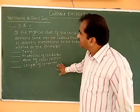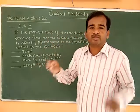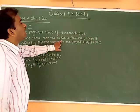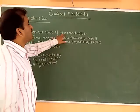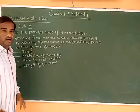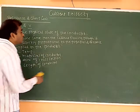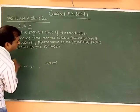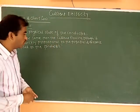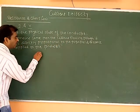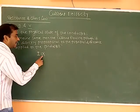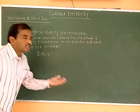As long as these conditions remain the same, our conditions remain constant. Now, the current is directly proportional to the potential applied to the conductor. Mathematically, I is directly proportional to V, where V is the potential difference.